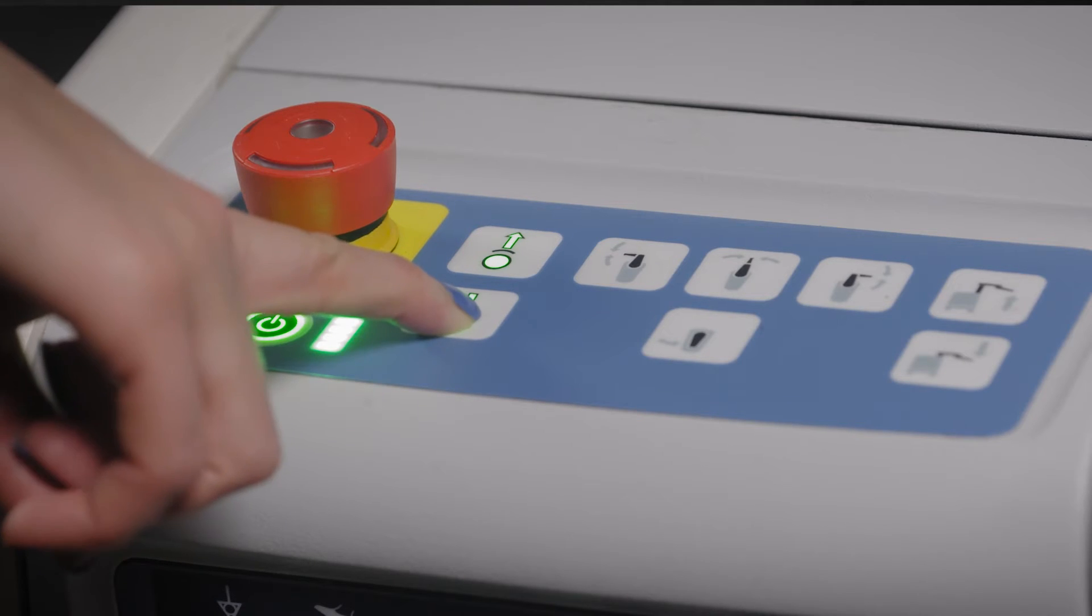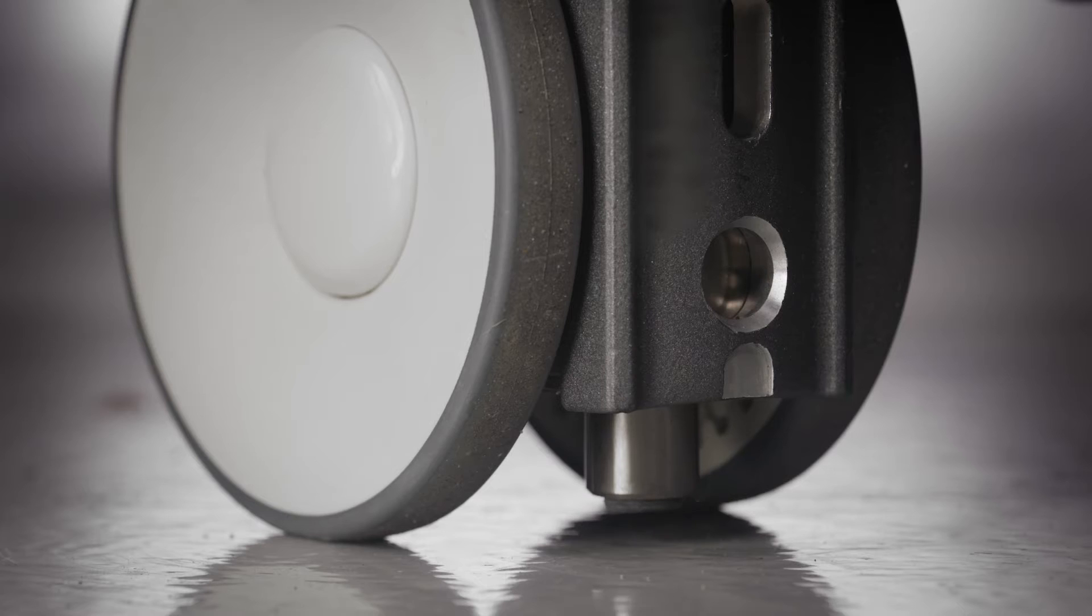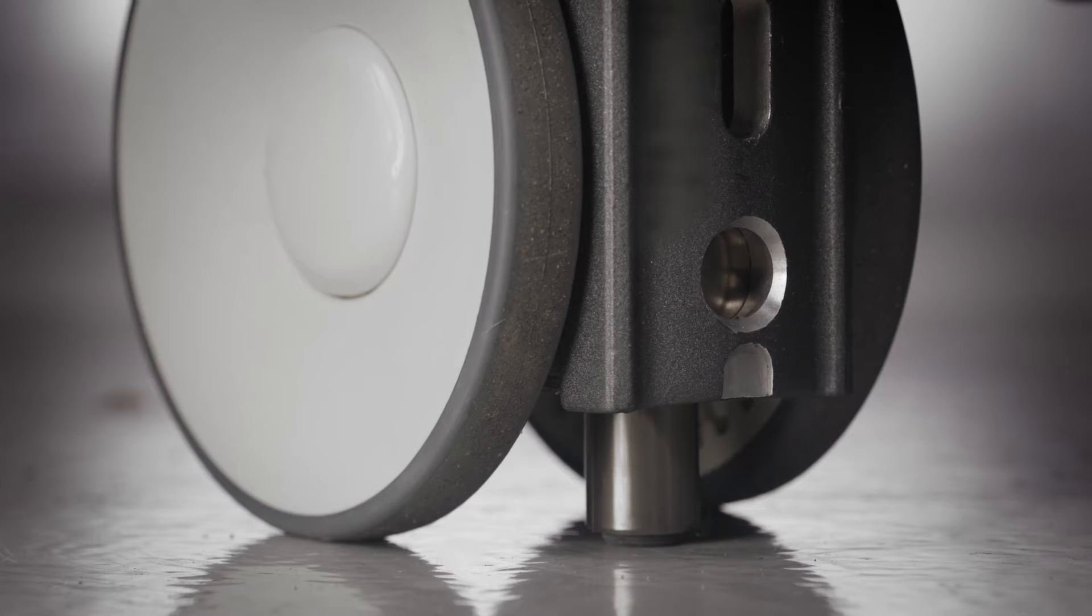This mobile platform allows you to set up the robotic base station and camera to best fit your needs throughout the entire procedure. Once the base station is in position, a simple press of a button deploys four stabilizers, which independently engage the floor and provide stability, independent from the patient and the OR table.